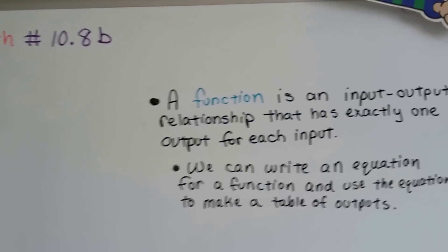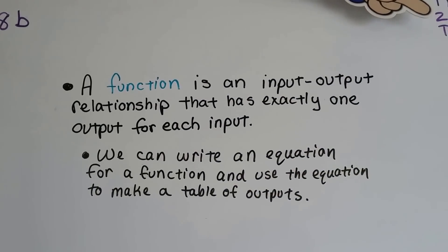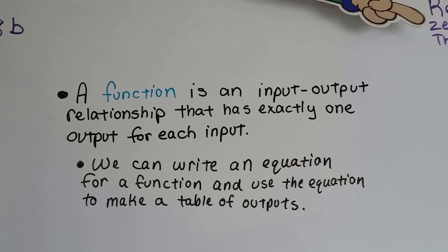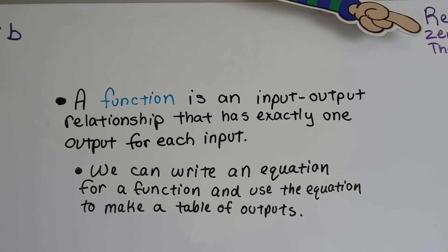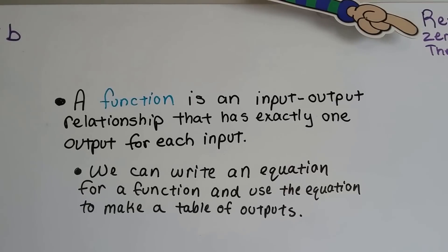This is a continuation of 10.8a. As we said before, a function is an input-output relationship that has exactly one output for each input. Something goes in, something comes out, and there's a relationship that there's only one thing coming out for each thing going in.